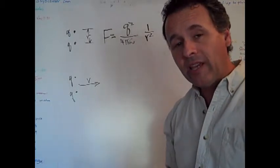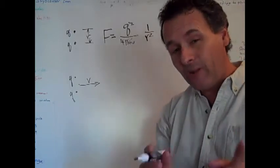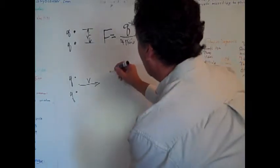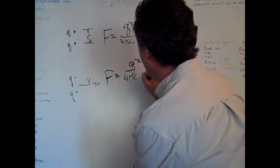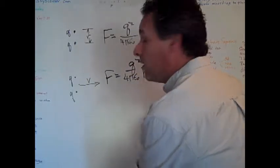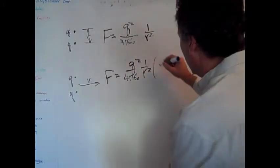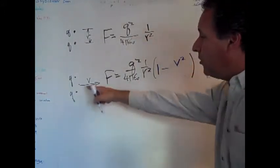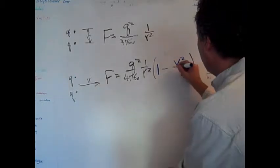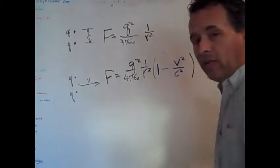Now in the second case, we solve this problem and we get an extra term. So we get that same bit, Q squared over four pi epsilon not R squared, but now there's an extra piece. It's one minus the square of the speed that the charges are moving, divided by the speed of light squared.